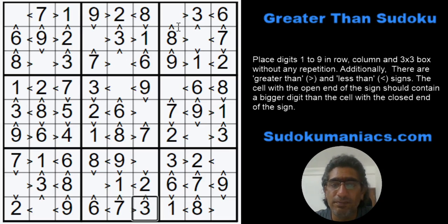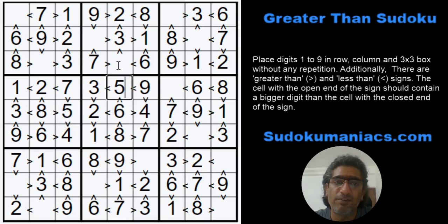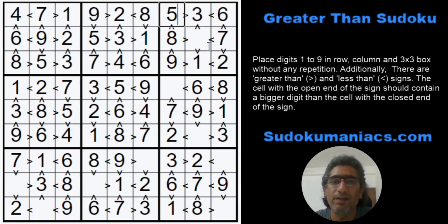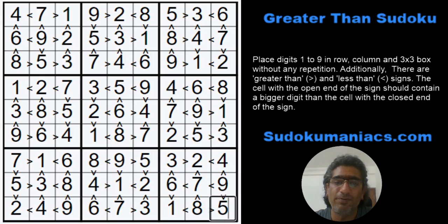Now we are just missing the digits 4 and 5. Using the remaining constraints: 4, 5, 5 and 4, 5 and 5, and 4, 4, 4, 5, 4, 5.